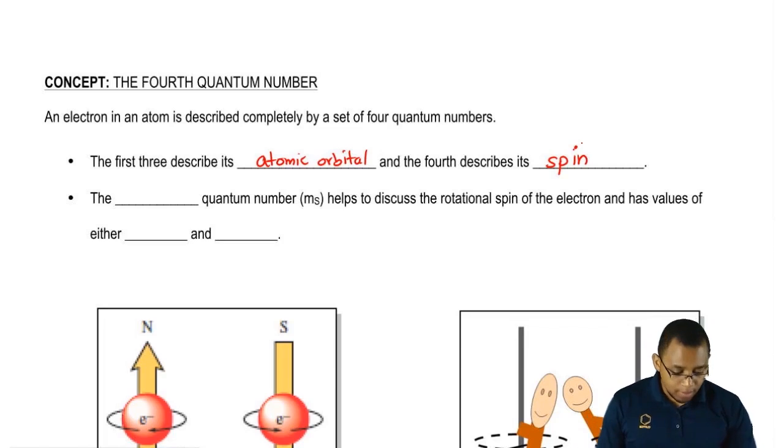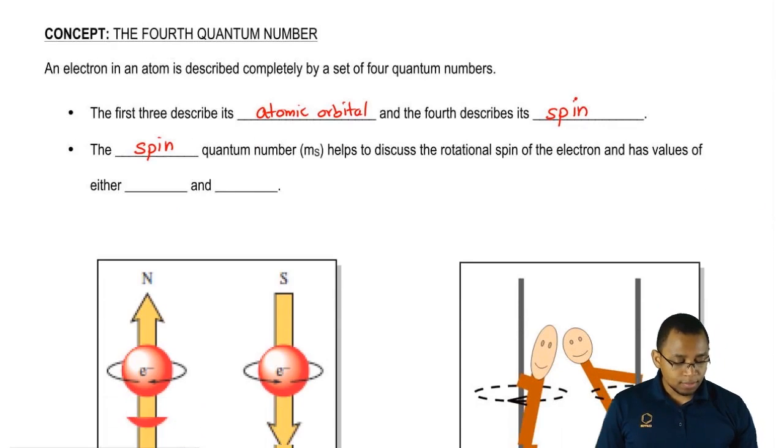Now we're going to say the fourth quantum number, because it looks at the spin of electron, is simply called the spin quantum number, or m sub s. And it helps to discuss the rotational spin of the electron and has values of either plus one-half or minus one-half.